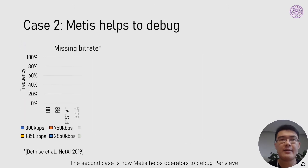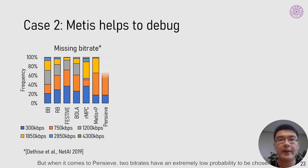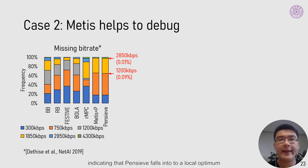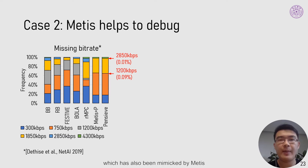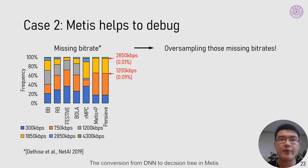The second case is how Metis helps operators to debug Pencil. Pencil is known to have the problem of missing bitrate. We present the frequencies of selected bitrates by different algorithms. For Pencil, two bitrates have an extremely low probability of being chosen, indicating that Pencil falls into a local optimum — which has also been identified by Metis. Without Metis, operators have to retrain the DNNs for hours to days without knowing whether it can escape the local optimum. The conversion from DNN to decision tree in Metis exposes an interface for operators to fix the problem.